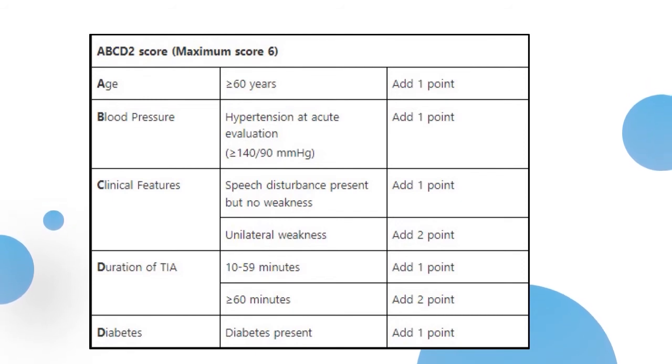If the duration of TIA is from 10 to 59 minutes, one point, and more than 60 minutes, two points are given.